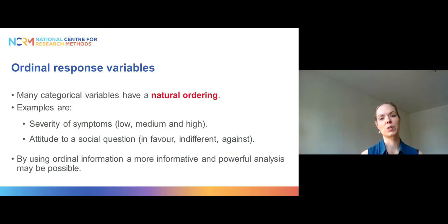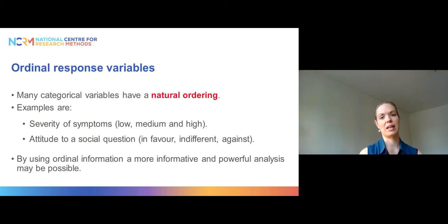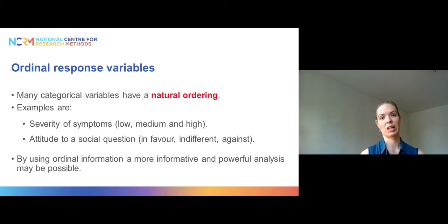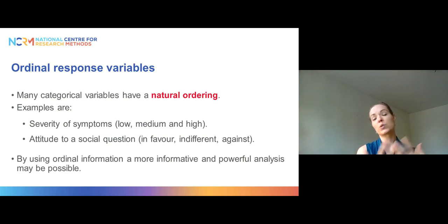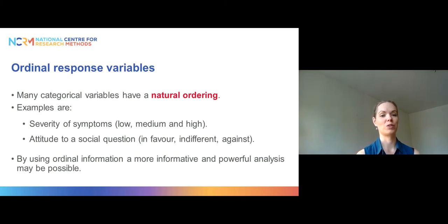Many categorical variables that we use in our research have a natural ordering. For instance, we might categorize symptom severity into low, medium, and high. While it would be difficult to say if the distance between these categories is the same, we can still say there is an order. We could also examine attitudes towards a social question — in favour, indifferent, or against — with a natural ordering from more to less agreeable. If we use this ordering information, we can conduct more informative and powerful analysis than with a multinomial model.